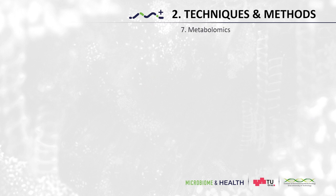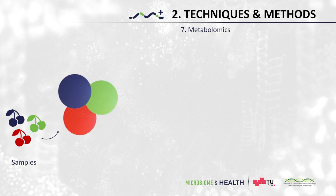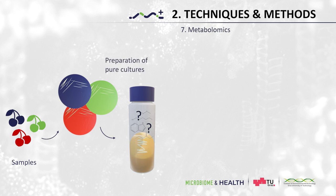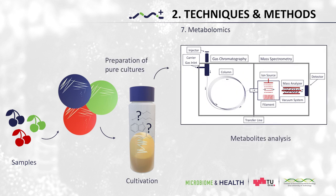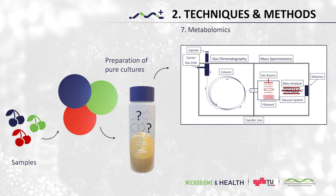This brings us to the last omic technique we will talk about today: metabolomics. It is possible to analyze the whole spectrum of metabolites produced by a whole community or even from a single microbial cell. In the example shown here, we can detect emitted volatile organic compounds using gas chromatography. It is even possible to find entirely new and unknown substances produced by the microbiome.